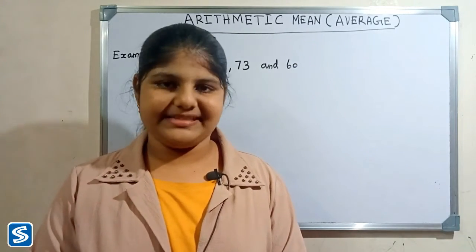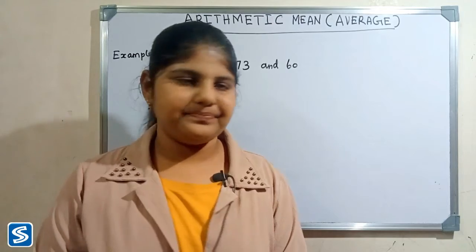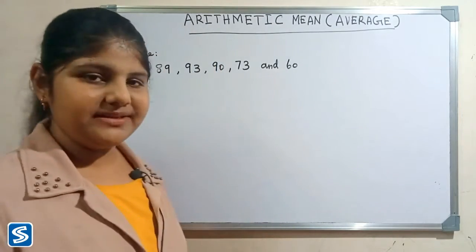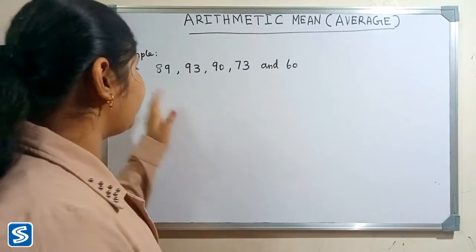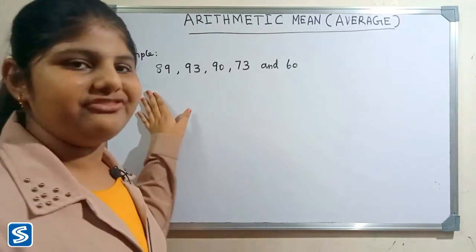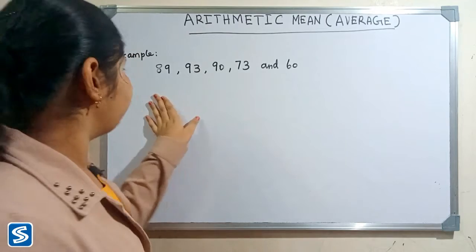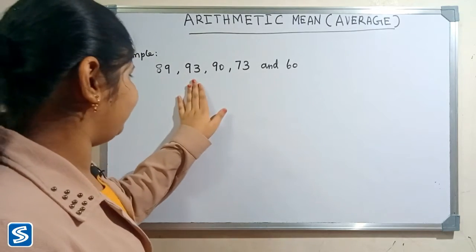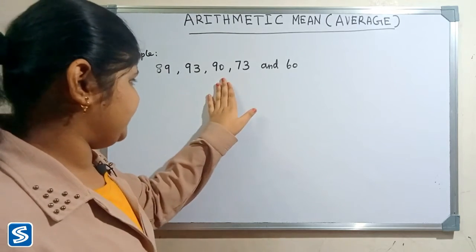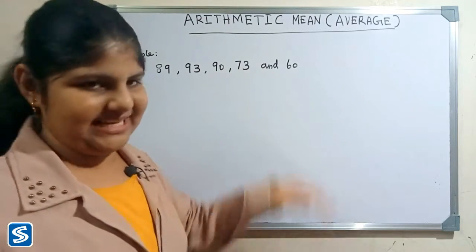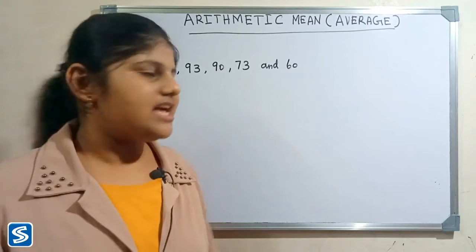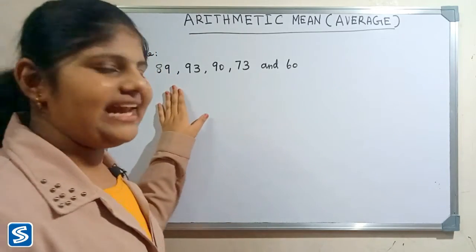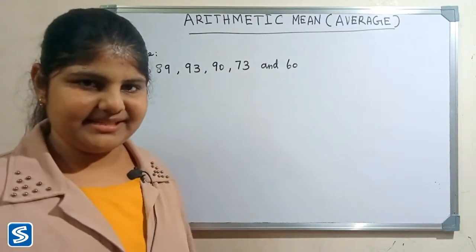Now we will take one more example. Here are the marks of five students: 89, 93, 90, 73, and 60. Now we have to find their average marks.